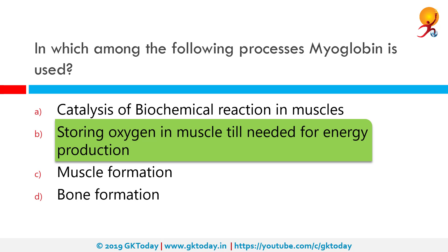Myoglobin is an iron and oxygen binding protein found in muscle tissue of vertebrates in general and in almost all mammals. It is distantly related to hemoglobin, which is an iron-oxygen binding protein in blood, specifically in red blood cells.